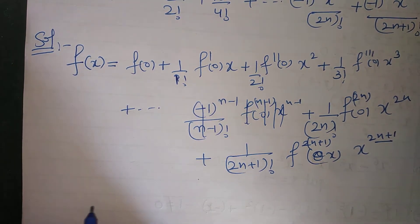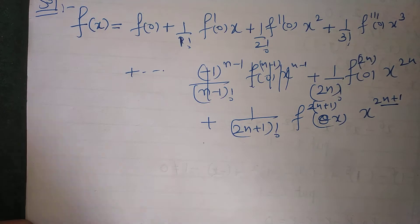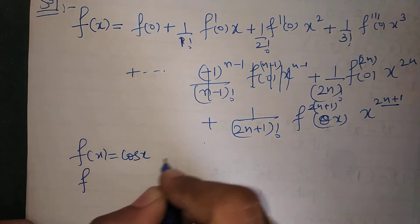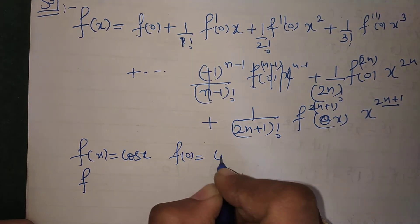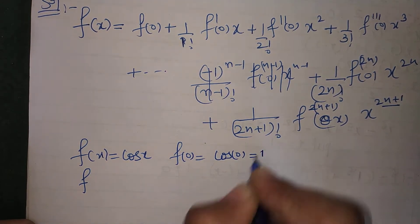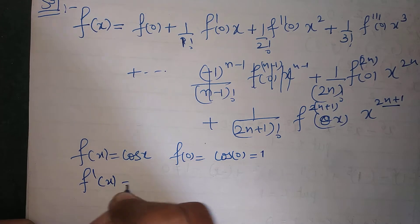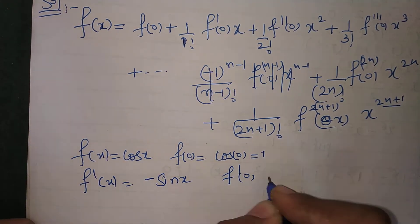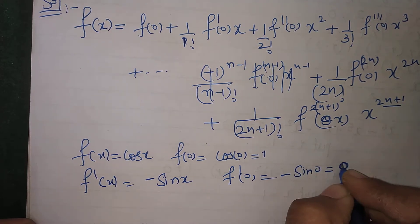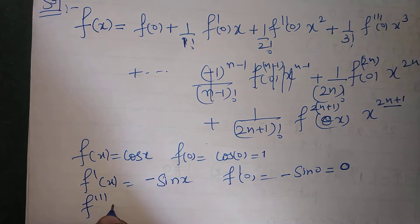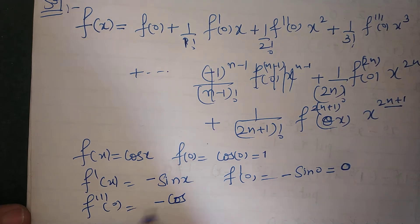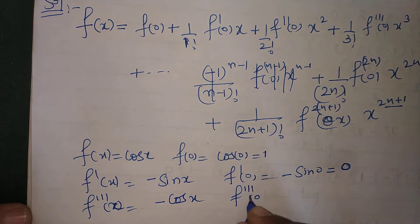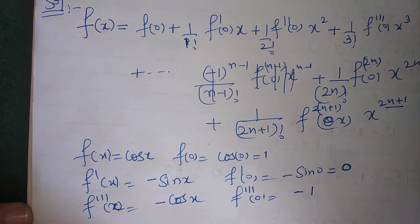Now we will put all the values. f(x) is cos x, so f(0) = cos 0 = 1. f'(x) is minus sin x, so f'(0) = 0. f''(x) is minus cos x, so at 0 it will be minus 1. f'''(x): the double dash is minus cos x, so at 0 it will be minus 1.